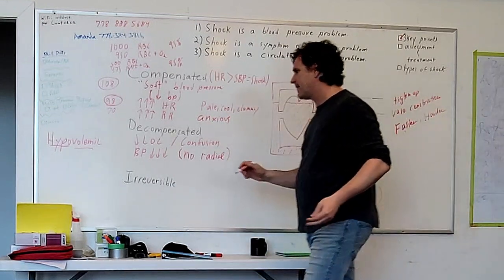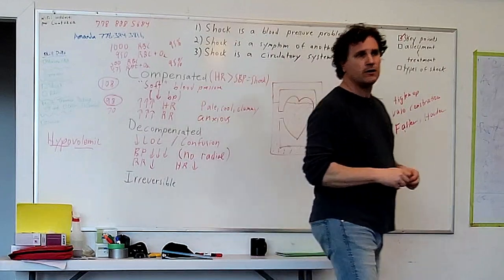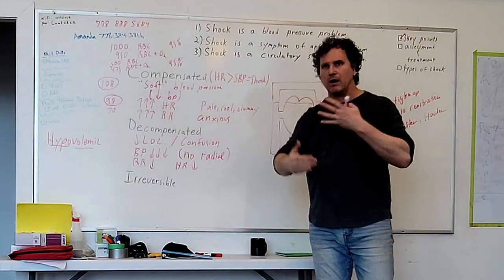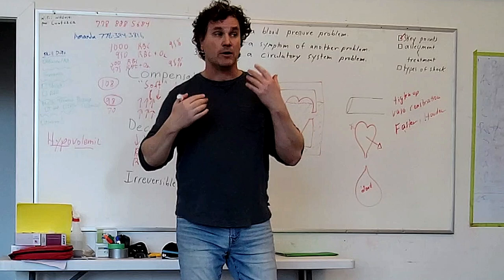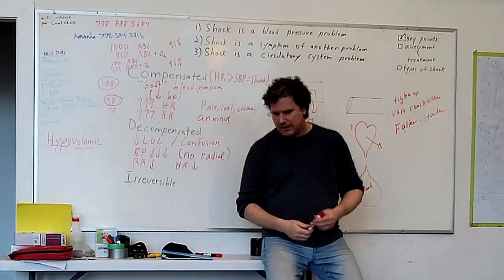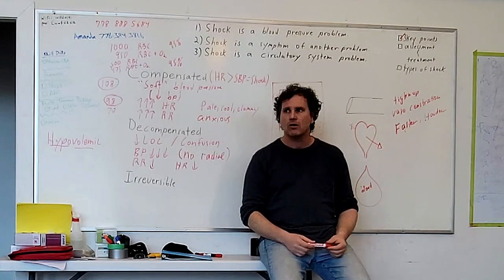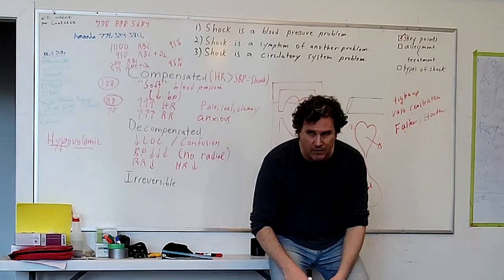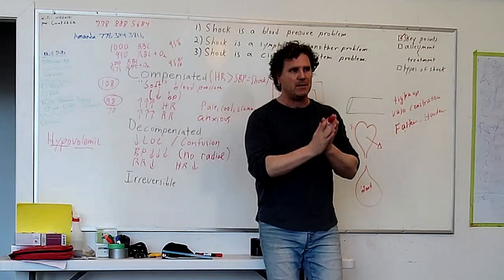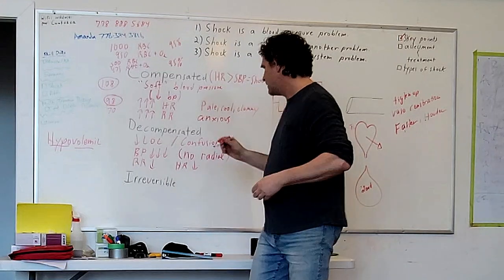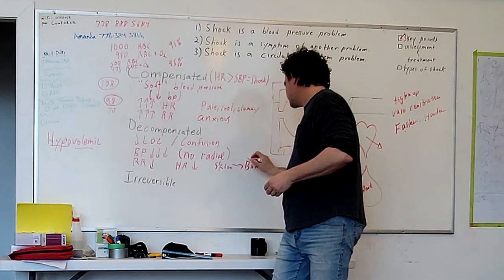In decompensated shock, respiratory rate drops, heart rate starts to drop as well. You get this curve where heart rate goes way up as the body works really hard, and then it runs out of steam and begins to drop. Level of consciousness drops dramatically. Skin looks — the technical term is like crap. Pale and clammy becomes gray, sweaty, cold, and cyanosis at the lips starts to appear — despite your oxygen administration, because they just don't have oxygen-carrying capacity in their circulatory system anymore.